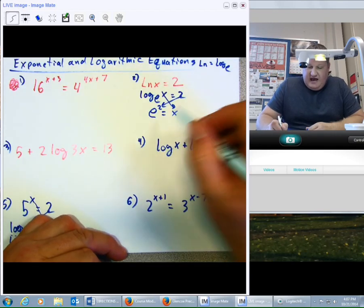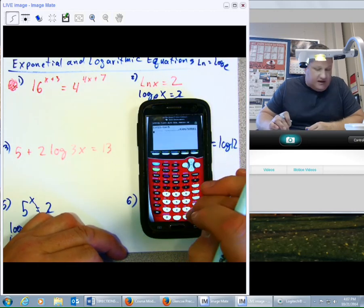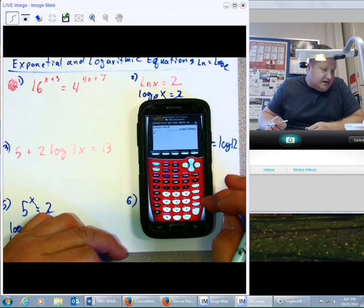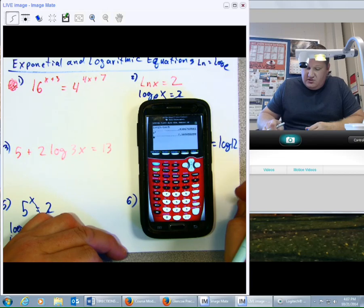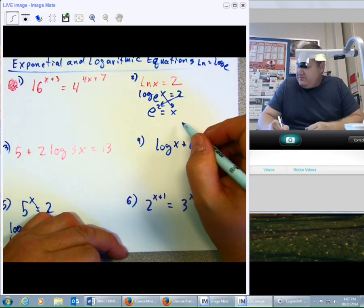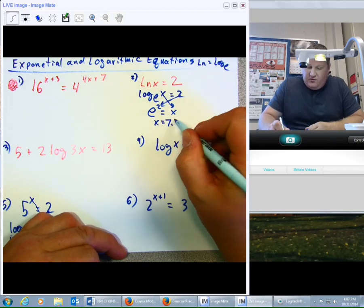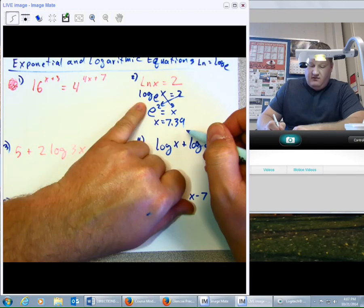Now, if I want to do that, I simply go to my calculator, and I say, second natural log, that's e, squared, enter, hit 7.34, basically, 7.39. x equals 7.39.